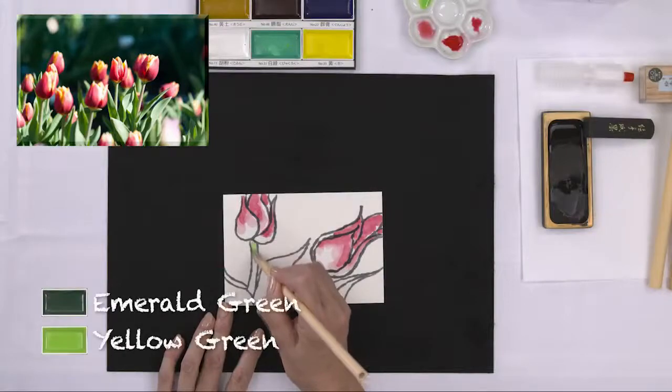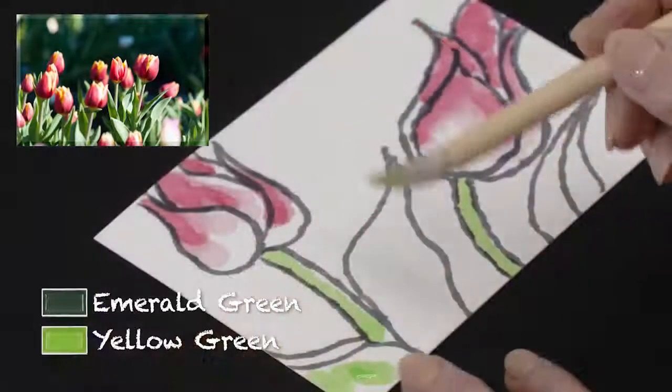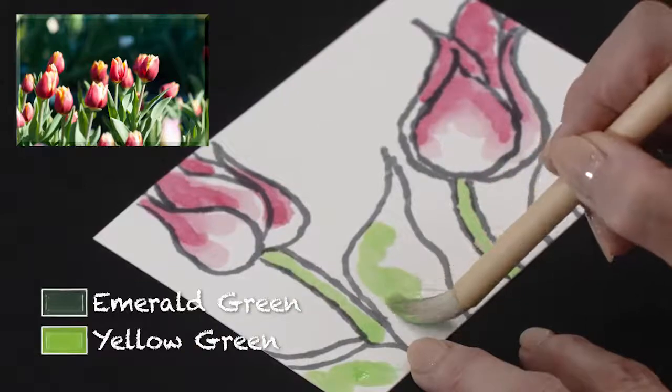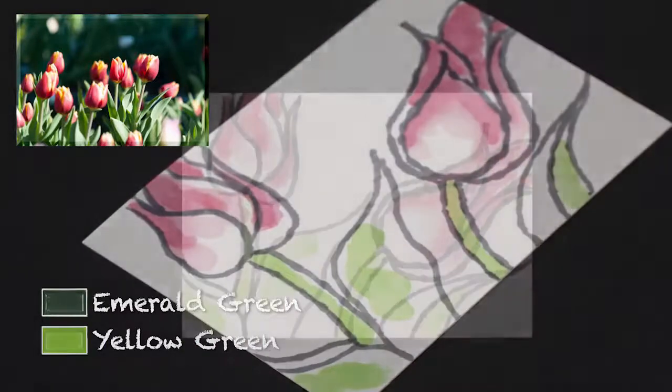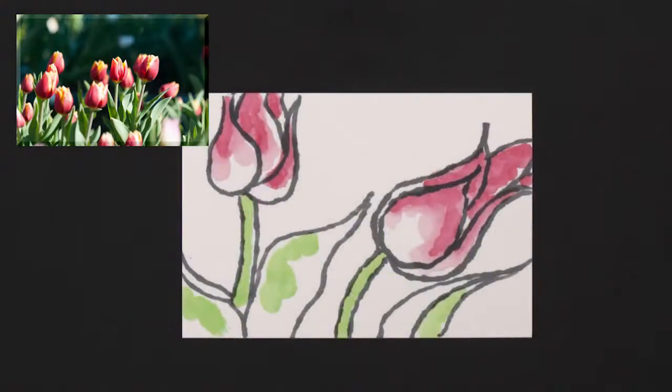Wet the coloring brush, then mix emerald green and yellow green to color in the stalk and part of the leaf. Leave some blank space here, too.